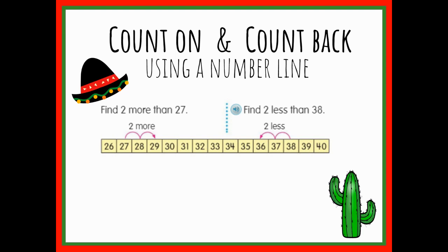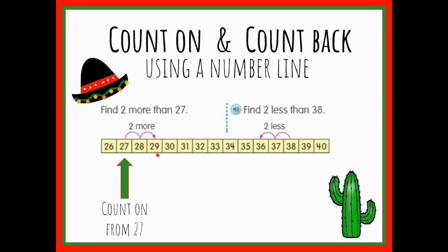So let's look at some examples. If you remember learning to use a number line, counting on and counting back, we learned that when you see the words 'more than,' we count on. So here it's asking to find two more than 27. We use 27 as our starting number and then we count on from 27. The hopping number tells us how many times we're going to hop.